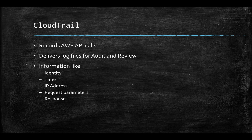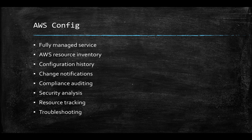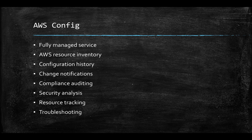Now we're going to talk about AWS Config. This is a fully managed service that provides organizations with an AWS resources inventory and configuration history. Configuration changes will be sent as notifications to enable security or governance actions. Organizations can discover their existing AWS resources, export the inventory, and determine how they are configured at any point of time and how they change over time. It's a very useful tool that enables component auditing, security analysis, resource change tracking, and troubleshooting.